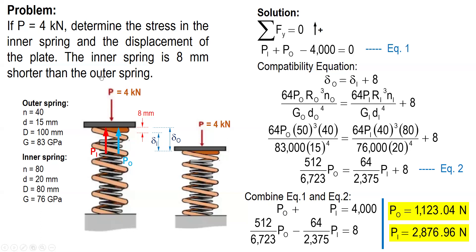So, after this one, we can now solve for the stress in the inner spring, since we now have the force, as well as displacement of the plate. The displacement of the plate is equal to this one, delta sub O. So, the displacement of the plate is also equal to the deformation of the outer spring. So, for the outer spring, we have P sub O, substitute, and we can solve for the displacement of the plate.